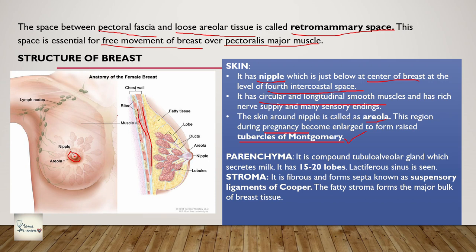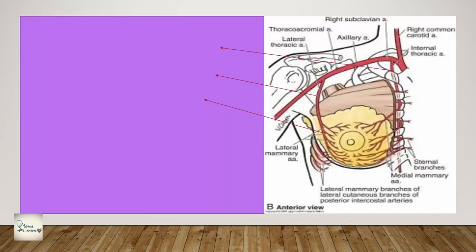Coming to the parenchyma, under the skin you can see it is a compound tubular alveolar gland - this point is very important to mention in exams. It has 15 to 20 lobules. The lactiferous sinus is the drainage point of the ducts, from which milk passes down to the nipple. The stroma is separated into fibrous stroma and fatty stroma. The fatty stroma forms the major bulk of the tissue. The fibrous septa are known as the suspensory ligaments of Cooper - very important. So the fatty stroma forms the bulk of the breast tissue.